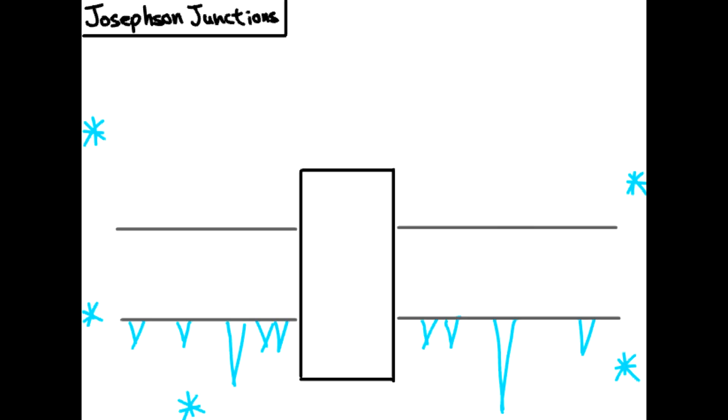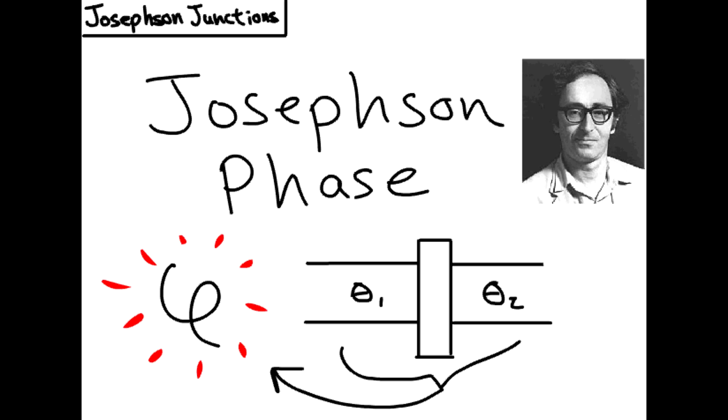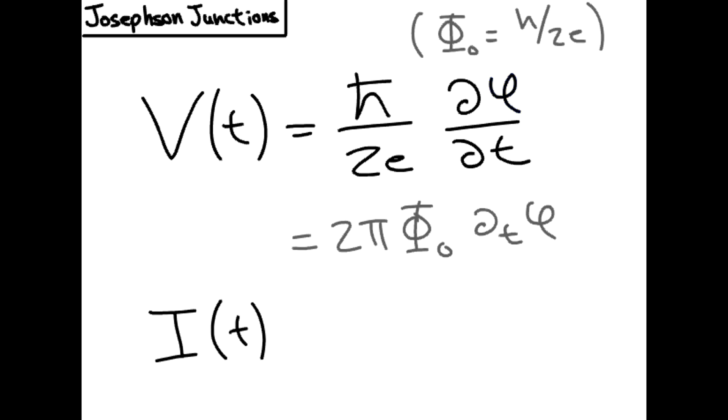Through a lot of math, we can find on each side of the insulator the wave function is just an amplitude times a phase. This Josephson phase is defined to be the difference in phase between the two superconductors and seems to govern most of the behaviors of the Josephson junction. While the voltage depends on the time derivative of the Josephson phase, the current depends instead sinusoidally upon it.